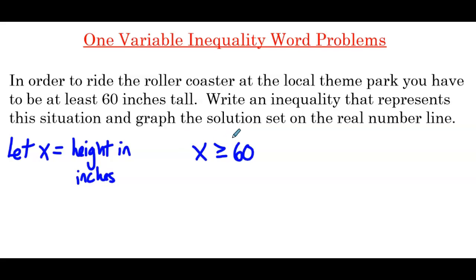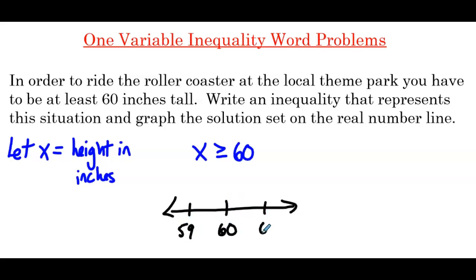Now we need to graph the solution set on the real number line. We'll put 60 in the middle, 59 to the left, and 61 to the right. To graph this solution set, put a closed point on 60 and shade all the values that are greater than 60. Now, typically with word problems, we're not going to be graphing a solution set. More likely, we're going to be using the inequality to come up with an answer.